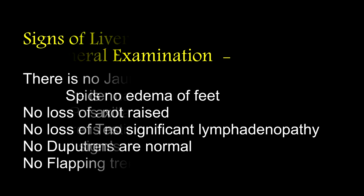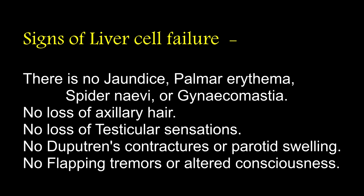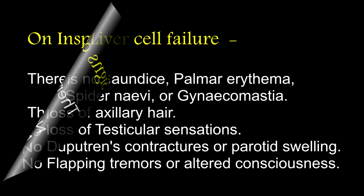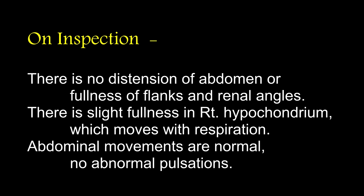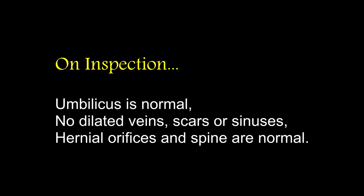Vital signs are normal. Looking for signs of liver cell failure: there is no jaundice, palmar erythema, spider naevi or gynecomastia. No loss of axillary hair. No loss of testicular sensations. There is no Dupuytren's contracture or parotid swelling. No flapping tremors or altered consciousness. On inspection of the abdomen: there is no distension or fullness of the flanks. There is slight fullness in the right hypochondrium which moves with respiration. No abnormal pulsations or peristalsis. Umbilicus is normal. No dilated veins, scars or sinuses. Hernial orifices and spine are normal.